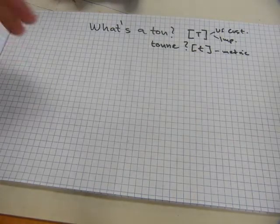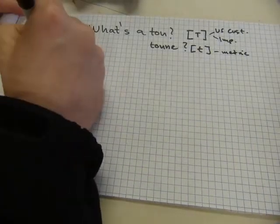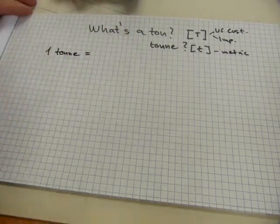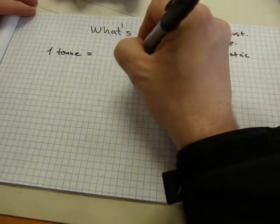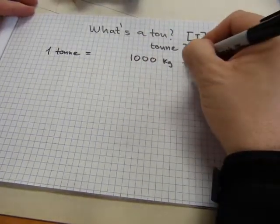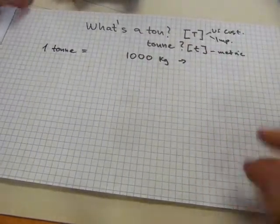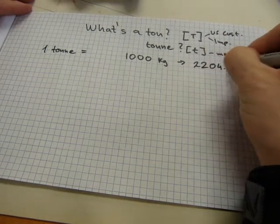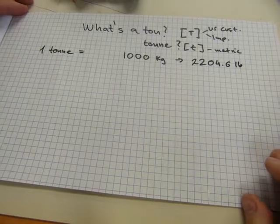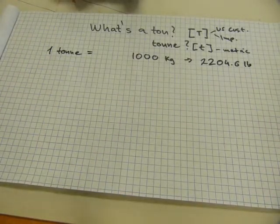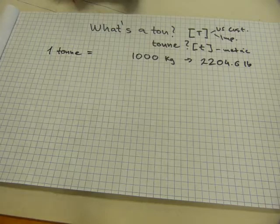We're going to get started with the metric first because that's simpler. One ton equals exactly 1000 kilograms. And if I convert this one to pounds, that's going to be 2204.6 pounds. That's how heavy one ton is. This one is also called metric ton or tonne if you want to pronounce it that way.